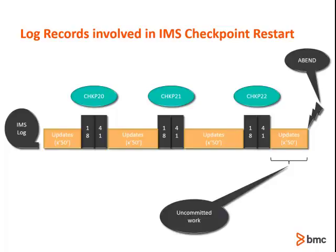Now let's discuss the differences when running in a BMP environment. The record types are the same for the database change and checkpoint records. However, the log records typically exist on the IMS OLDS datasets. When a BMP region ABENDs — in our scenario at checkpoint 22 — the backout would happen automatically while the BMP step is in the process of ABENDing. During a restart, typically the 0x18 records exist on the OLDS datasets and will be automatically inputted to a restart. However, if the restart is delayed and the OLDS datasets have been overwritten by IMS, the SLDS containing checkpoint 22 would be manually inputted to the restart via the IMS log RDD.